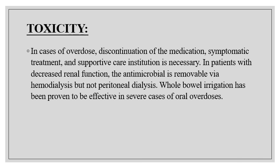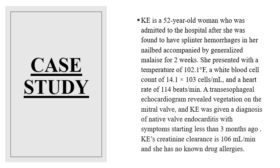Case study: a 52-year-old woman was admitted to a hospital after being found to have a splinter hemorrhage. She presented with a temperature of 102.1°F, a white blood cell count of 14,100 cells/mL, and a heart rate of 114 beats per minute. A transesophageal echocardiogram revealed vegetation on the mitral valve, and she was given a diagnosis of native valve endocarditis with symptoms starting less than three months ago.